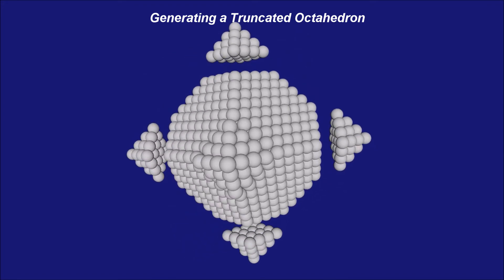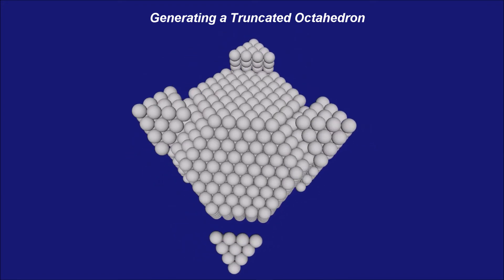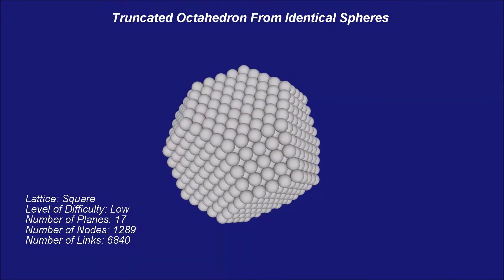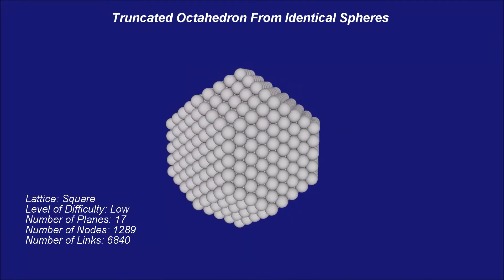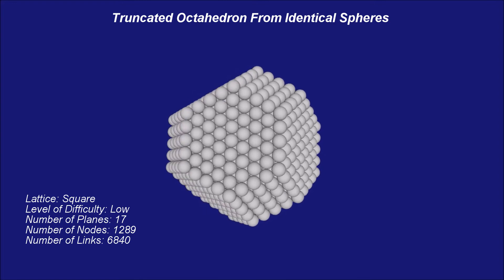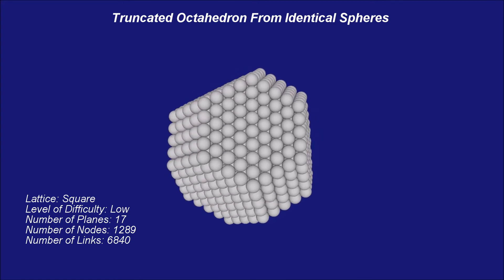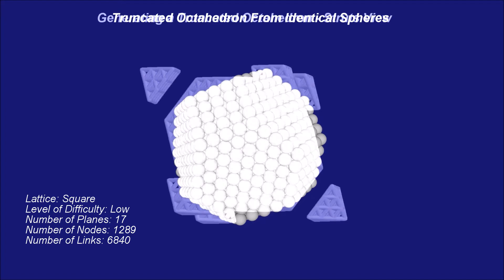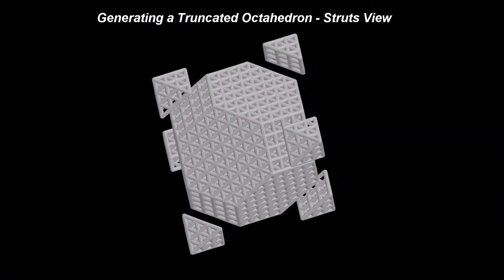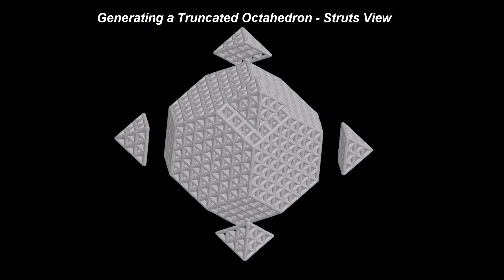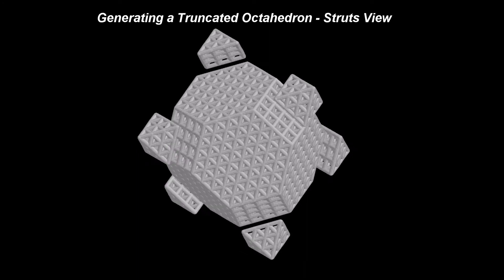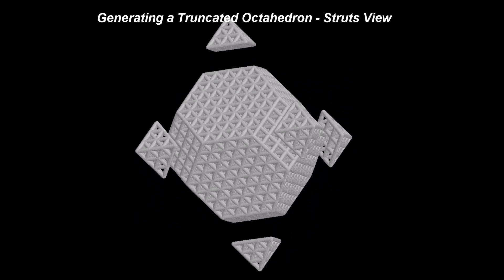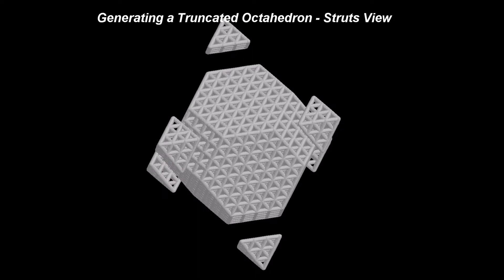In CPS, when starting from an octahedron assembled from identical spheres, one can generate a truncated octahedron by removing spheres forming the vertices of the platonic solid. The truncated octahedron has two types of edges: the first type is formed between two hexagonal faces, and the second type is formed between a square face and a hexagonal face.